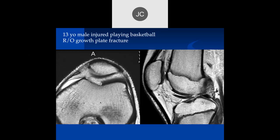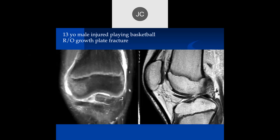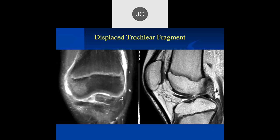13-year-old male injured playing basketball. At the medial trochlea, transitioning to central, there's a large area of cartilage loss and it looks like it's displaced inferiorly. If you see a big defect in the cartilage with sharp margins and the underlying bone looks pretty normal, this is very typical of an acute injury. Then you have to look for the displaced fragment — and that's the displaced fragment right there. On coronal images, we can see some bone edema in the subchondral bone where impaction occurred.